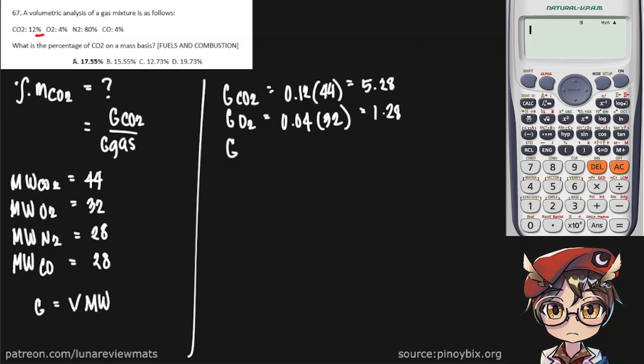Next, G of our nitrogen, that is 0.8 times 28, that is 22.4. Finally, carbon monoxide, 0.4 times 28, that is 0.12.